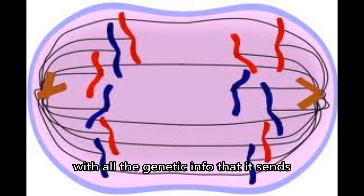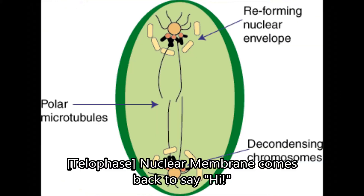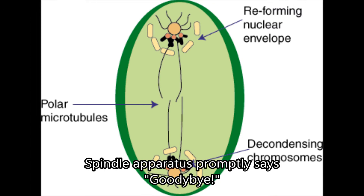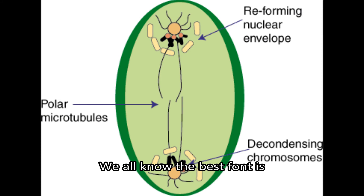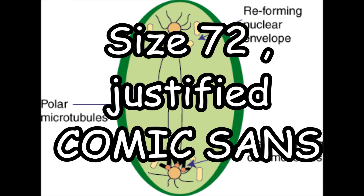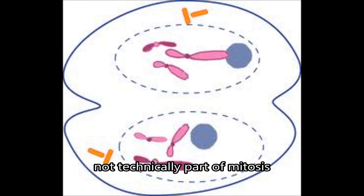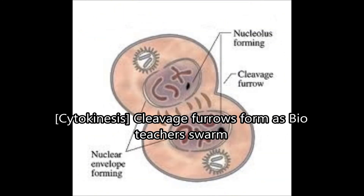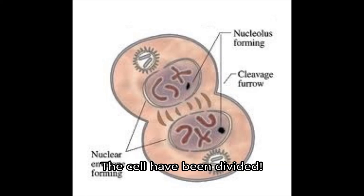Chromatids go to opposite ends with all the genetic info that it sends. Each side the same — they be identical. Your membrane comes back to say hi. Spindle apparatus promptly says goodbye. Cell is elongated as if by an invisible hand. Now for cytokinesis — not technically part of mitosis. Cleavage furrows form. Guess what? The cell hath been divided.